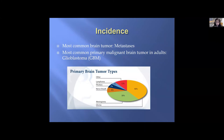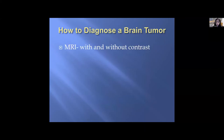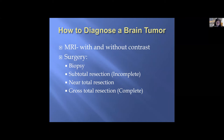The most common brain tumor is actually metastases — those that spread from another site. The most common primary malignant brain tumor in adults is glioblastoma. Gliomas consist of 40% of primary brain tumors, meningiomas 30%. In adults, approximately 80% of gliomas are high-grade and 20% are low-grade, with about 50% being grade 4 glioblastoma. Diagnosis begins with MRI with and without contrast, followed by surgery — biopsy, subtotal, near total, or gross total resection.